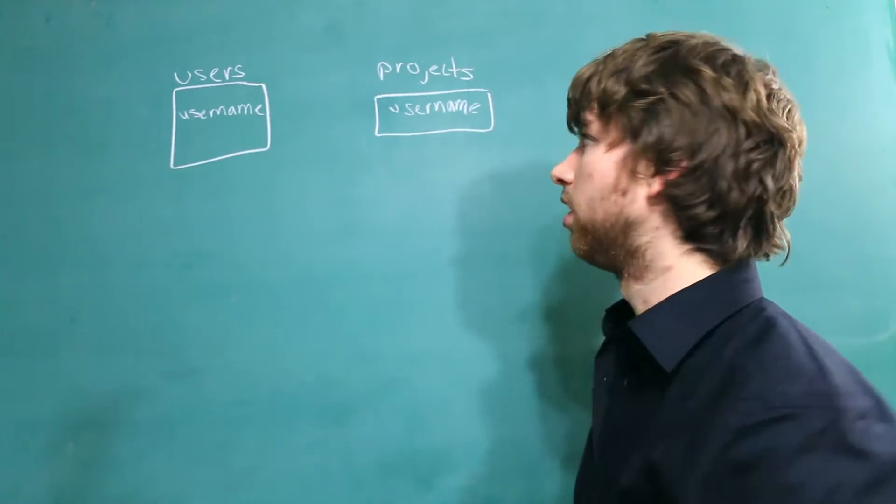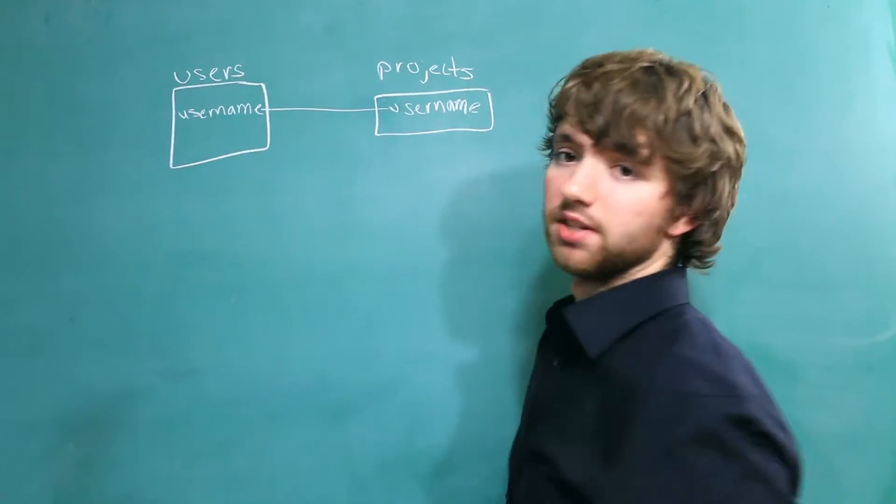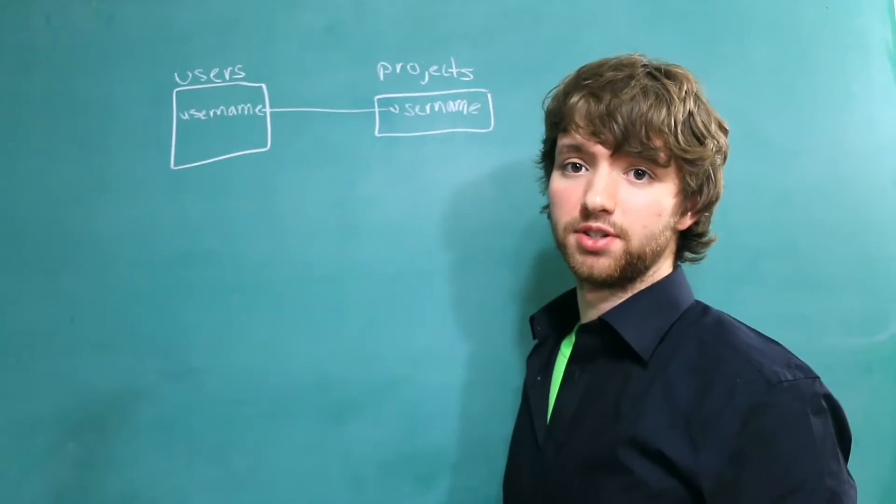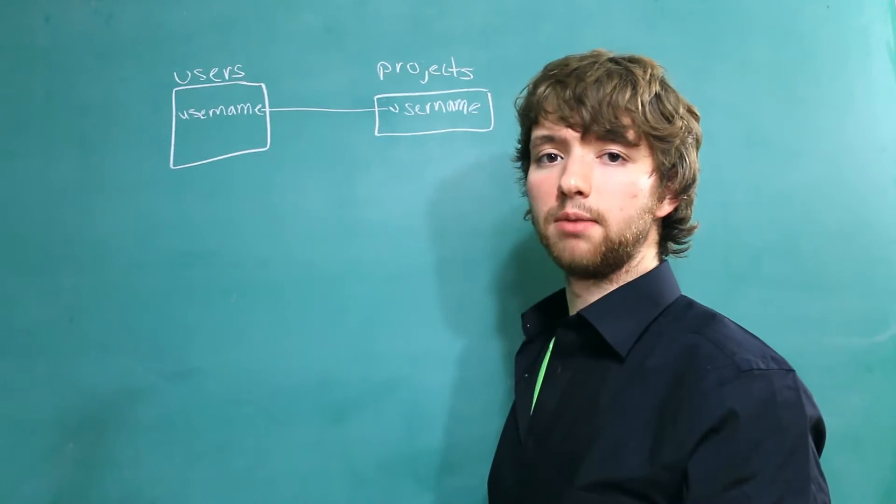For those who appreciate a visual, this is what it would look like. We have a username column that references the username column of the users table. Now, we have a user who tries to change their name.